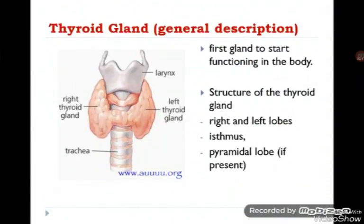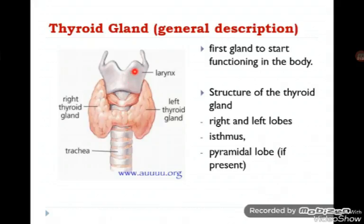This gland is one of the first glands that start functioning in our body, originating from the foramen cecum and the posterior one-third of the tongue, descending until it reaches its final destination anterior to the trachea and inferior to the larynx. It is composed of two lobes — the right lobe and left lobe — separated by the isthmus. Sometimes the isthmus may be connected to the upper cartilage by a pyramidal lobe, which is an embryological remnant from the descending of the thyroid tissue.